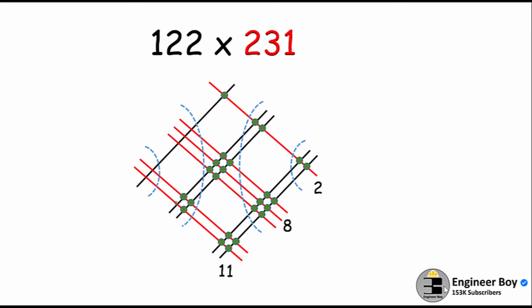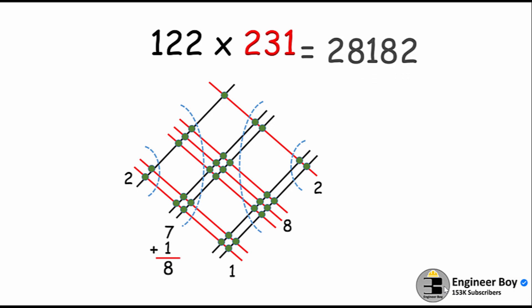Then one more, making 11, then four plus three makes seven, and at the left-hand corner we have two. Now making adjustments: 11 is more than nine so we carry one over, add it to seven making eight. The answer is 28182 — easy! It takes less time than the old method.